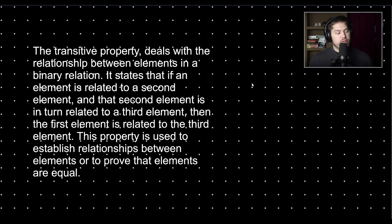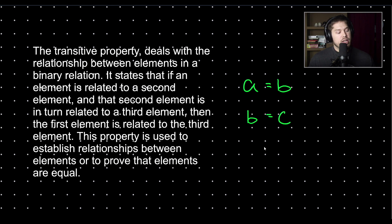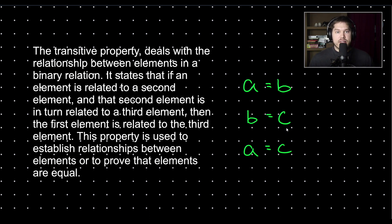In other words, the transitive property is where if we have A equals B and B equals C, then A equals C. So there is a relationship established between A and B — their relationship is that they are equal. There is a second relationship established between B and C, and their relationship is also that they are equal. Therefore, the transitive property implies that A is equal to C.